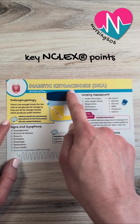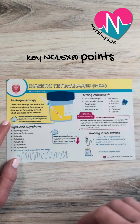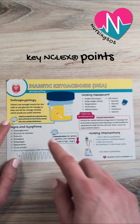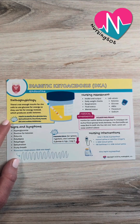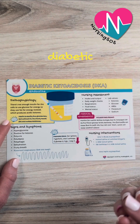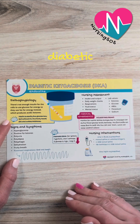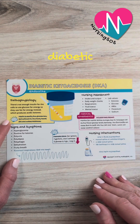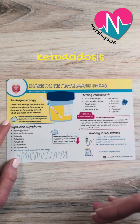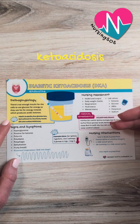Let's walk through some key NCLEX points for diabetic ketoacidosis. What's happening here is there's not enough insulin in the body for glucose to be used by the cells for energy. So they use fat instead. The problem with this is that fat produces ketones, and ketones are acid, so the acid is going to rise in the body.